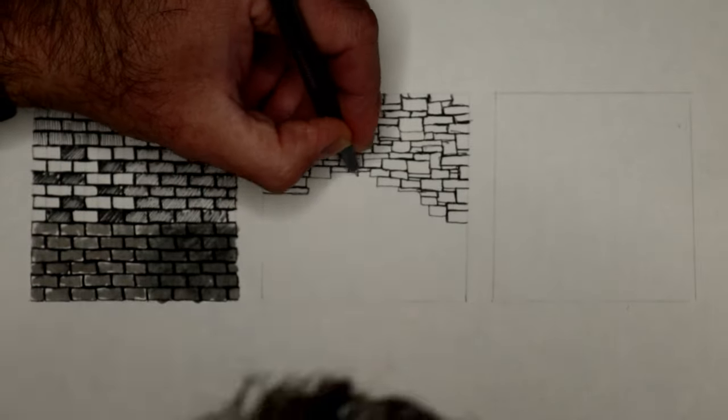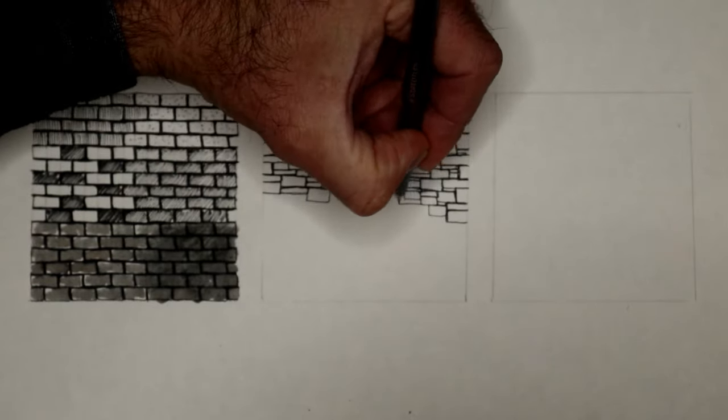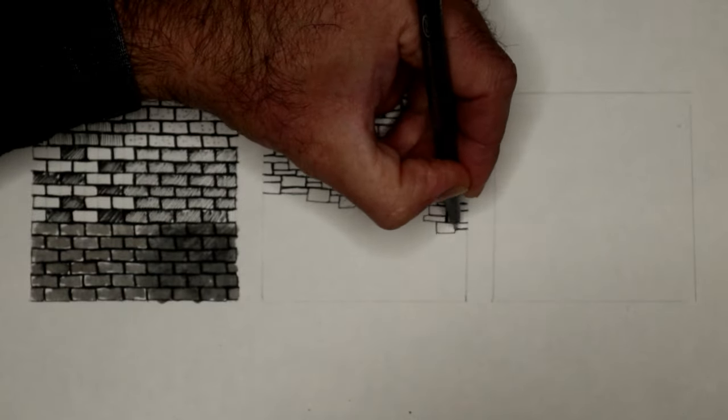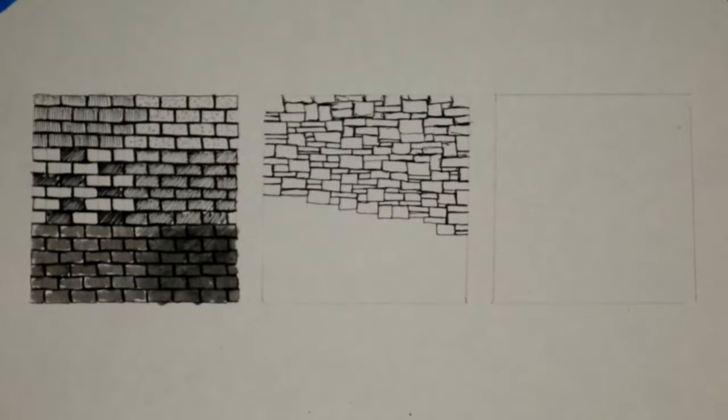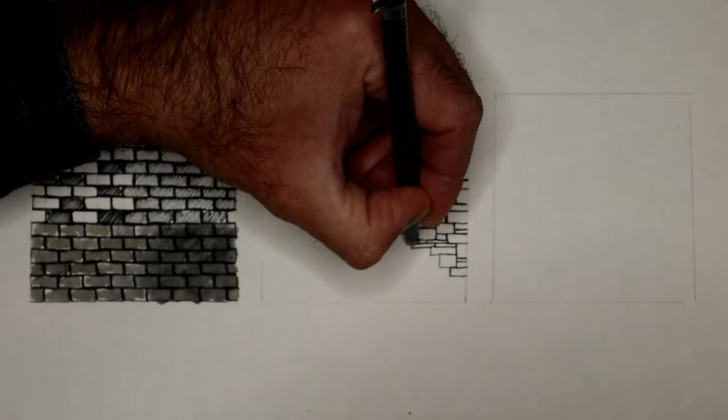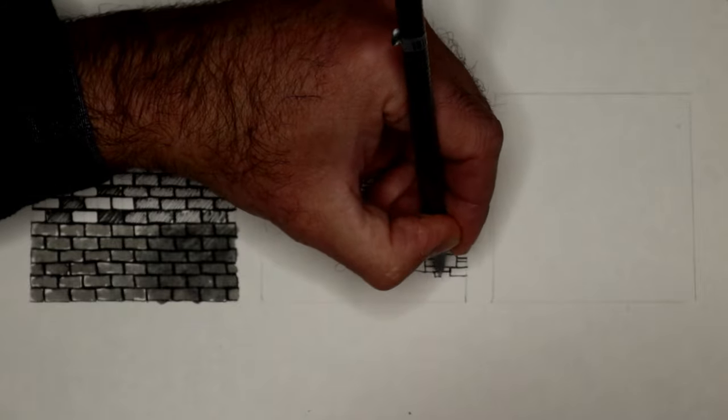When I put my hand in front of the camera it focuses on the top of my hand and the image unfortunately goes blurry. Just bear with it, it will refocus itself shortly.